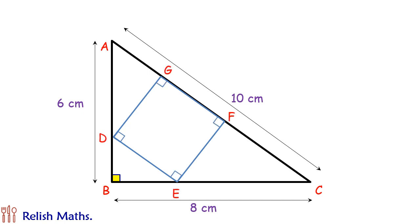Condition is the side of the square, i.e. GF, should lie on the hypotenuse of the triangle. Question is find the area of biggest such possible square.